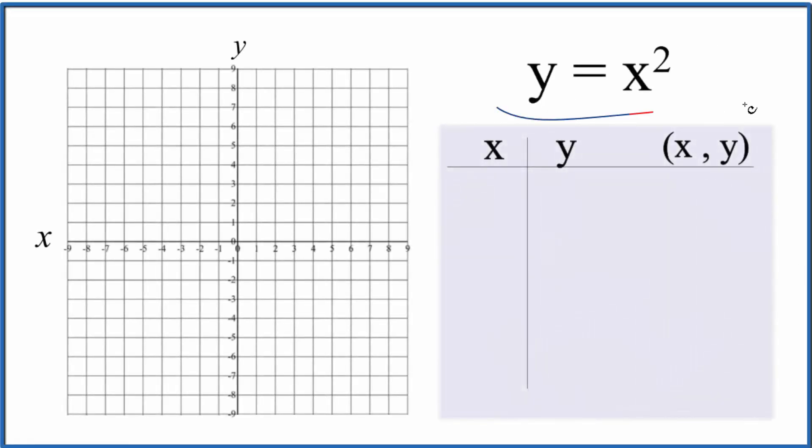Let's graph the equation y equals x squared. We're going to do this by making a table of values. When we make our table of values for y equals x squared, we can put any number in for x and we'll get a value for y that would be on the line for our equation. But in practice, we want to choose values of x that are going to give us values of y that actually fit on our graph paper.